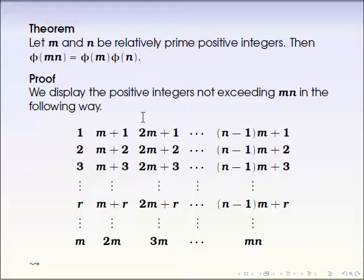So I just suggest to read the proof and follow each argument. But let me just explain briefly here. Definitely, to check phi of m times n, we are only looking for the integers from 1 through m times n. So let's arrange those integers in the following way.